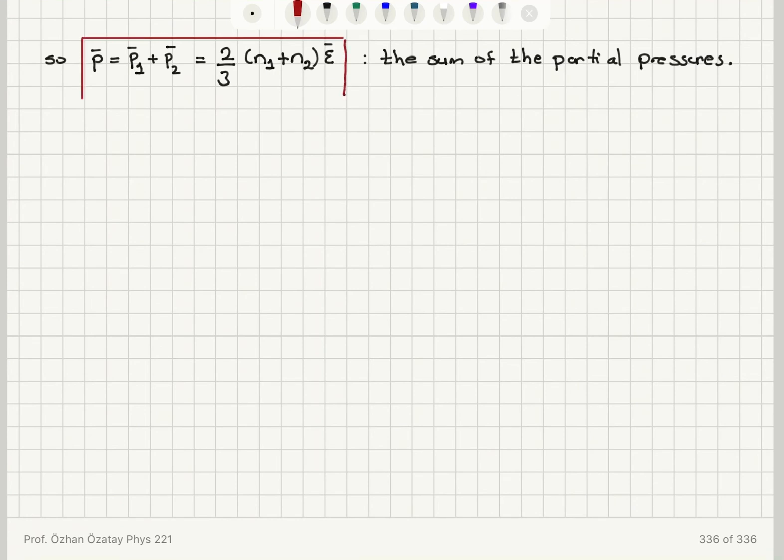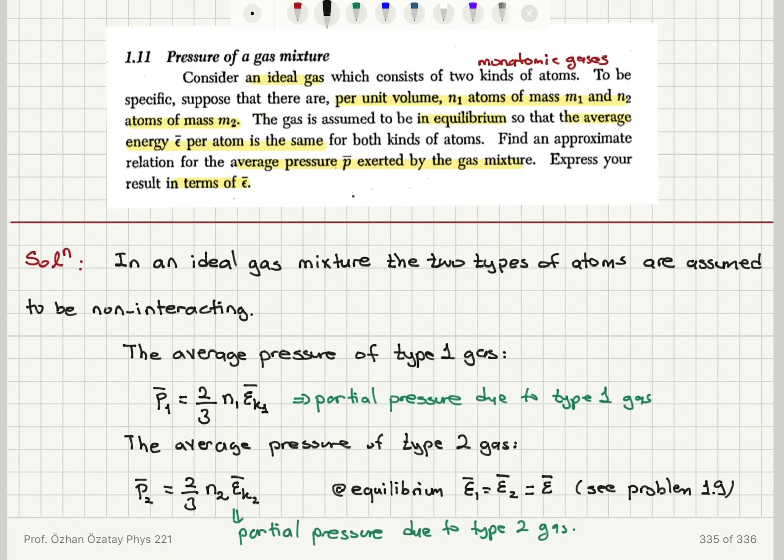So the average pressure exerted by the gas mixture is written in terms of the mean energy per atom Epsilon bar in this way. So let's summarize what we did. We have an ideal gas. Ideal gas is a dilute gas, remember, and it consists of non-interacting atoms. So we have two kinds of atoms. That means each molecule has one atom, so we have monatomic gases. And to be more specific, we have N1 atoms per volume for type 1 and N2 atoms per volume for type 2, which have masses M1 and M2 respectively. The gas is in equilibrium, and at equilibrium we have shown in problem 1.9 that the mean energy per atom is the same.